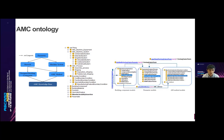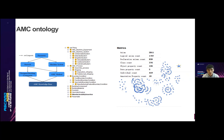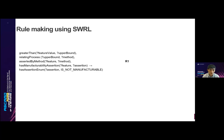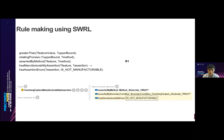Relations are created to link the building components' properties to the AM methods. The metrics for this ontology present a number of classes and properties. On top of the knowledge base, rules can be applied to detect the manufacturability of building components, mainly by comparing the processes and boundary conditions with detected features from the design. For instance, if a manufacturing feature exceeds the limit of one AM method, we assert that such building components are not manufacturable by that method. Similarly, other rules including logistics and the construction plan can also apply.